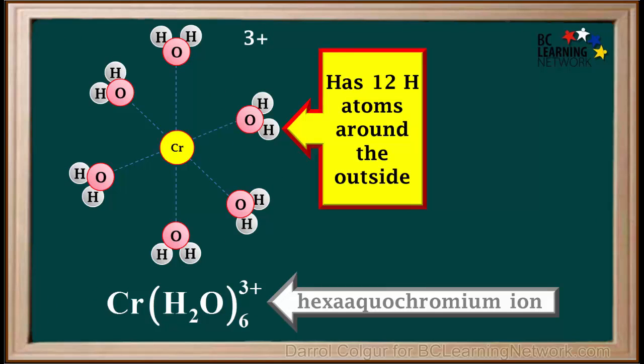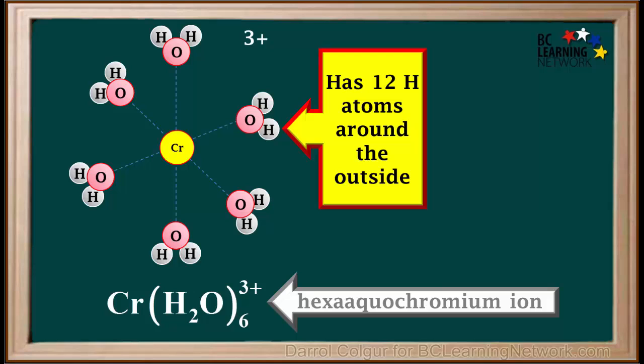Notice the hexa aquochromium ion has 12 hydrogen atoms around the outside. This enables it to undergo acid hydrolysis. Remember this ion is dissolved in water. We'll draw one of the water molecules here. We'll consider a collision between this water molecule and the hexa aquochromium ion. This hydrogen atom will donate one of its shared electrons to the rest of the hexa aquochromium ion, and change into an H+ ion, or proton.